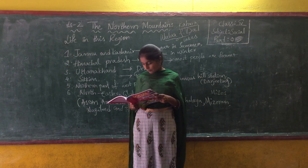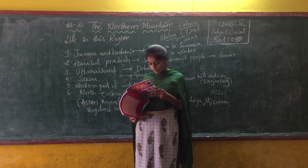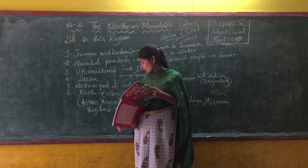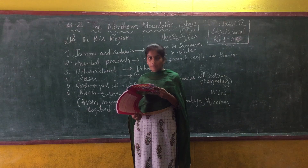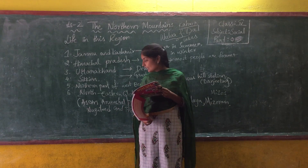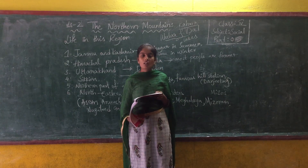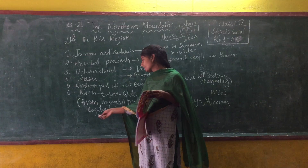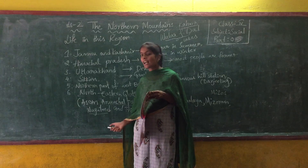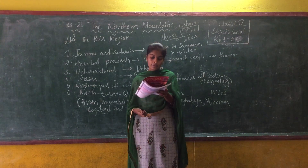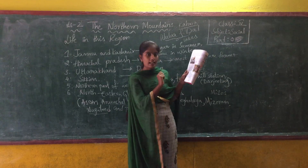Farming is the main occupation of the people of Nagaland. The main crops grown are rice, maize, millet, and oranges. Nagaland is also called the land of songs and music. Here you can see the traditional dress of the people of Nagaland.